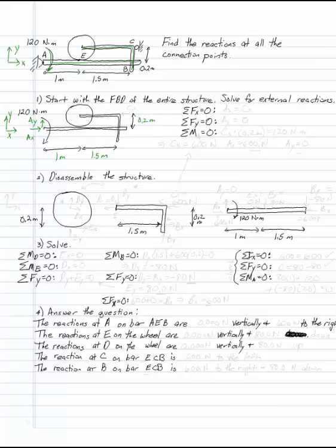And the other constraint I have is at C. C is a wheel, so I will have one horizontal reaction there. Those three forces have to constrain this from moving under that 120 Nm moment. Let's find out how that works.